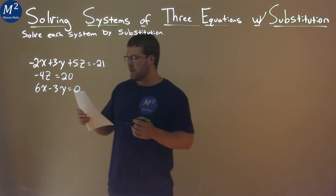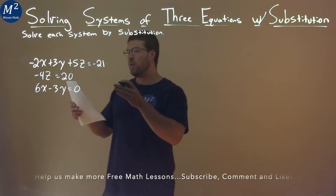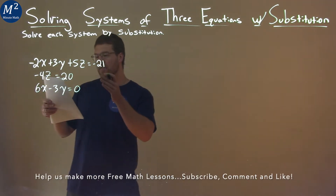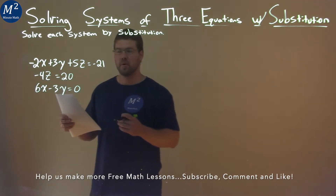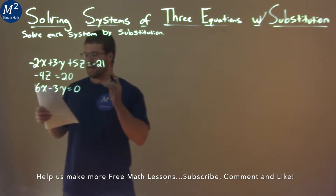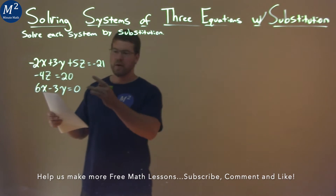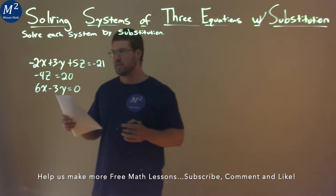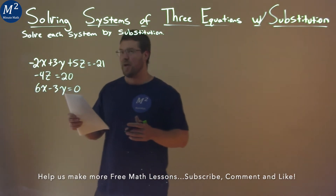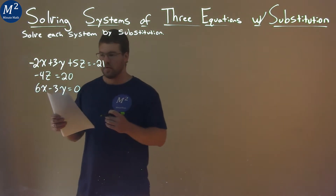We're given this problem right here: negative 2x plus 3y plus 5z equals negative 21, negative 4z equals 20, and 6x minus 3y equals zero. We want to solve this system by substitution.